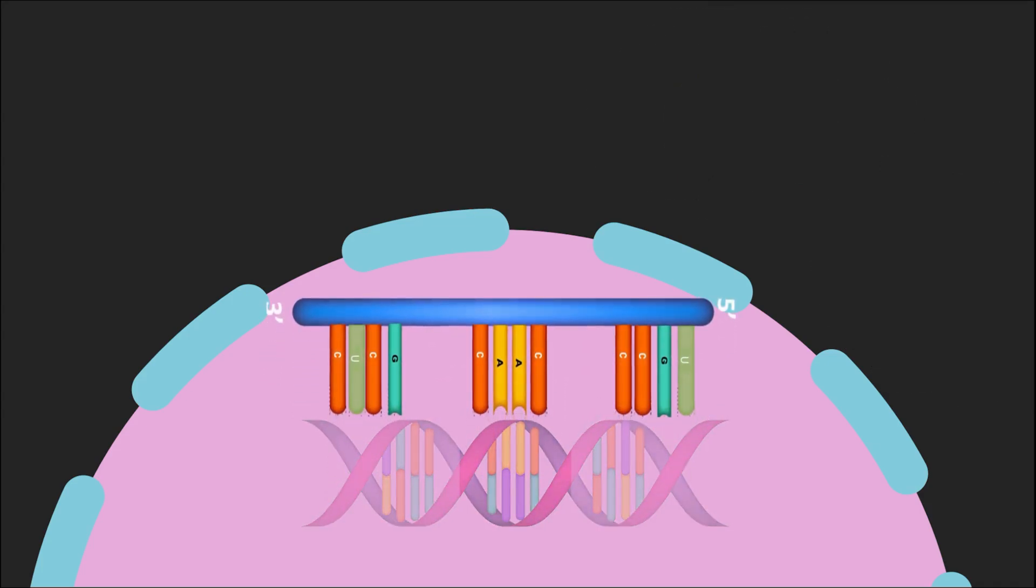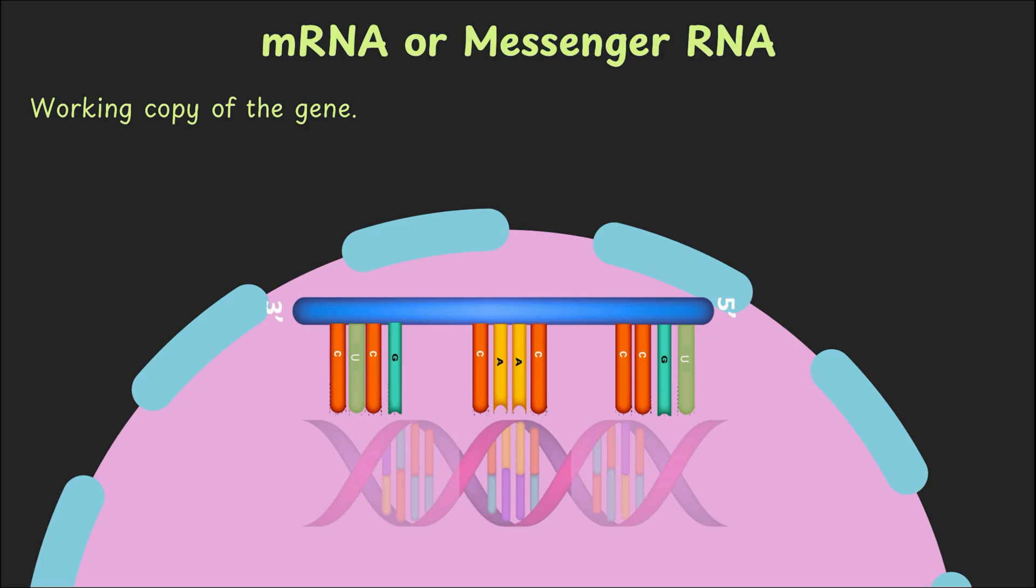It makes a working copy of just the gene it needs. This working copy is called the mRNA or the messenger RNA. This copy is short-lived and it's also portable. It can be carried outside the nucleus and read by the cell's machinery to make protein. And making that mRNA from a gene in the DNA, that's what we call transcription.